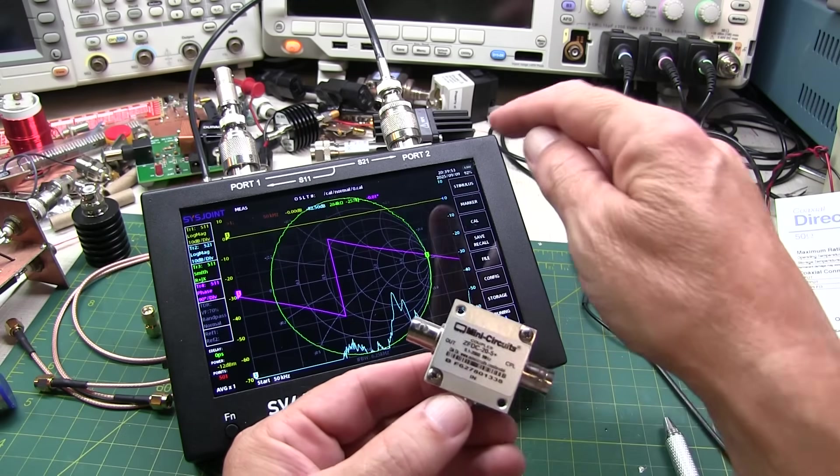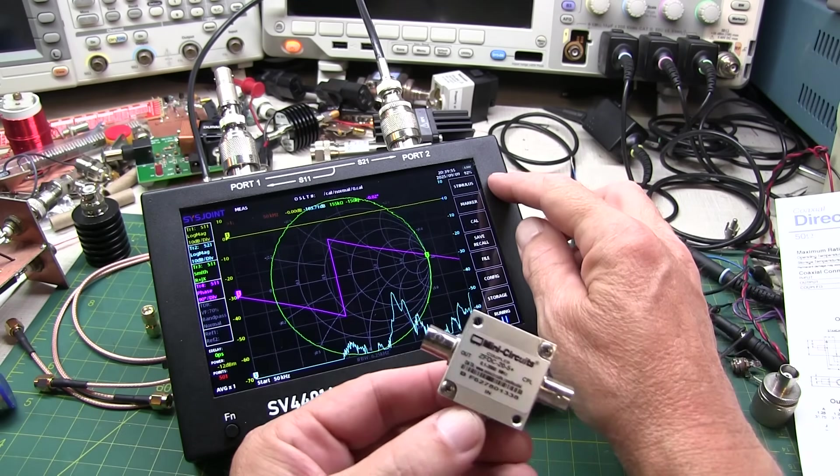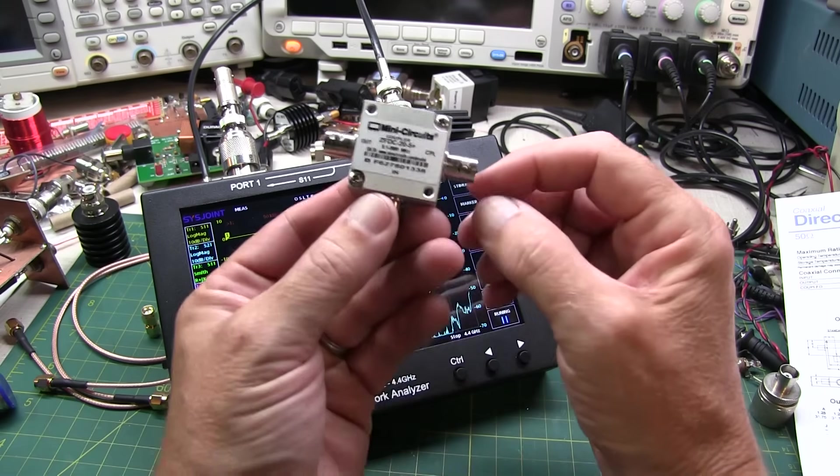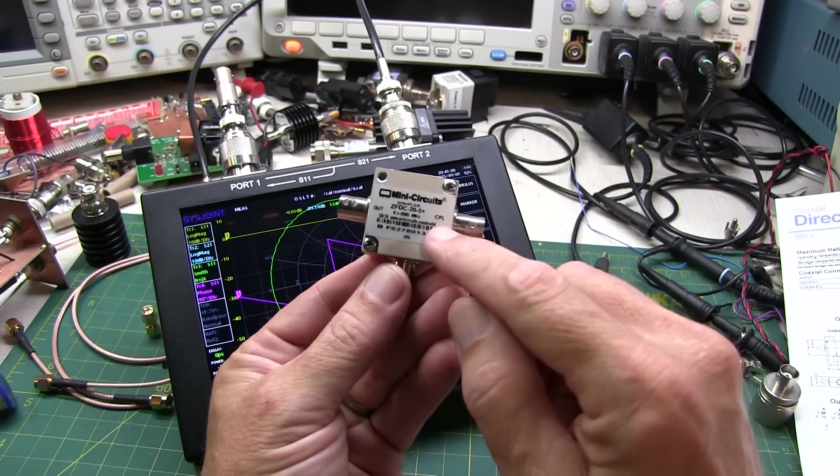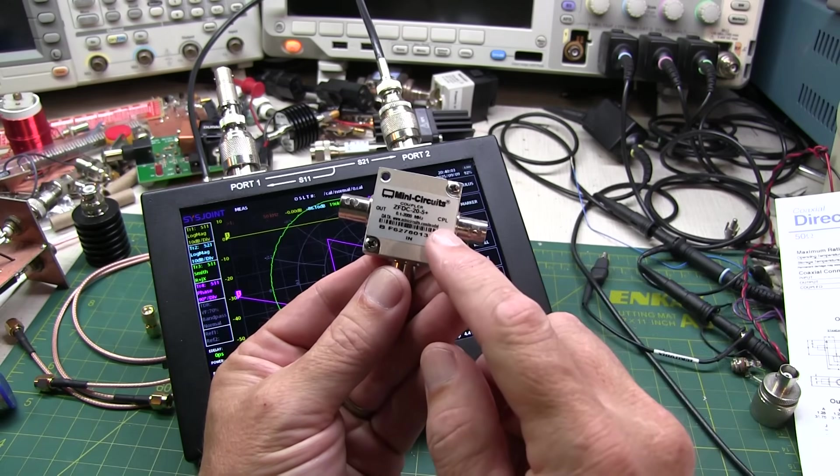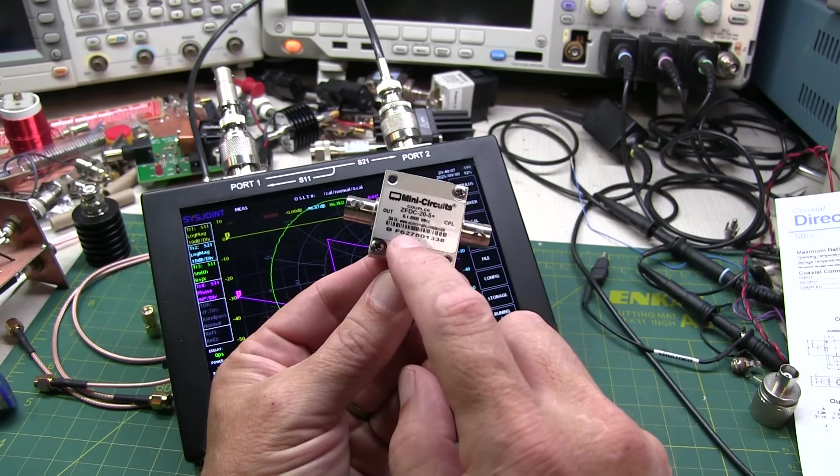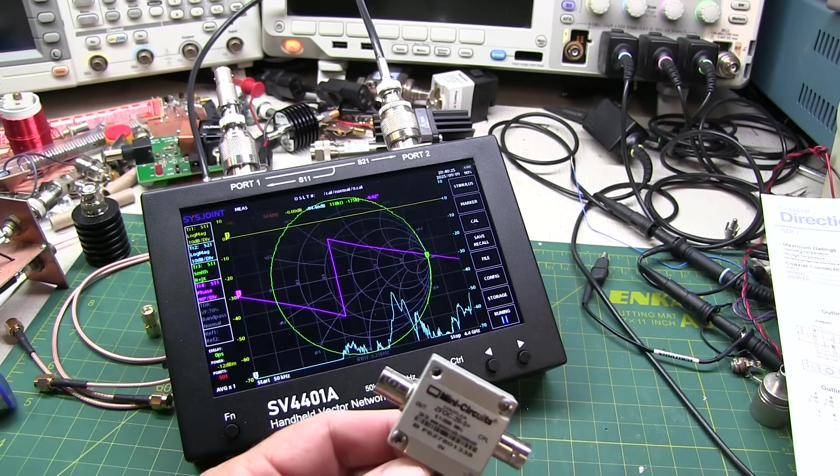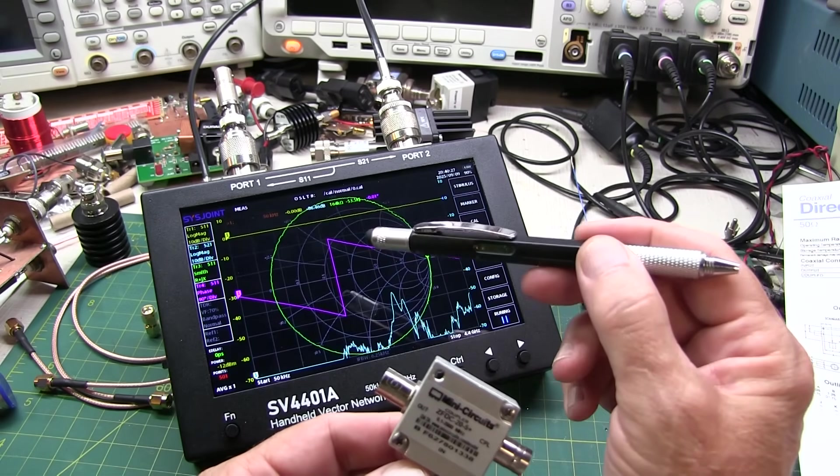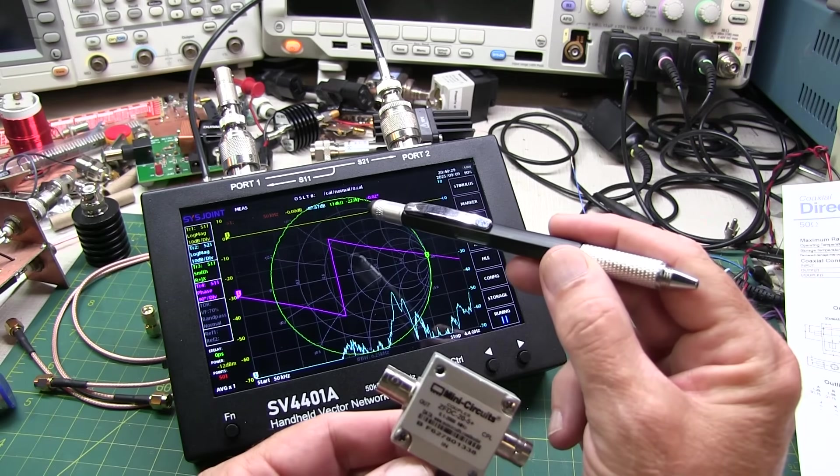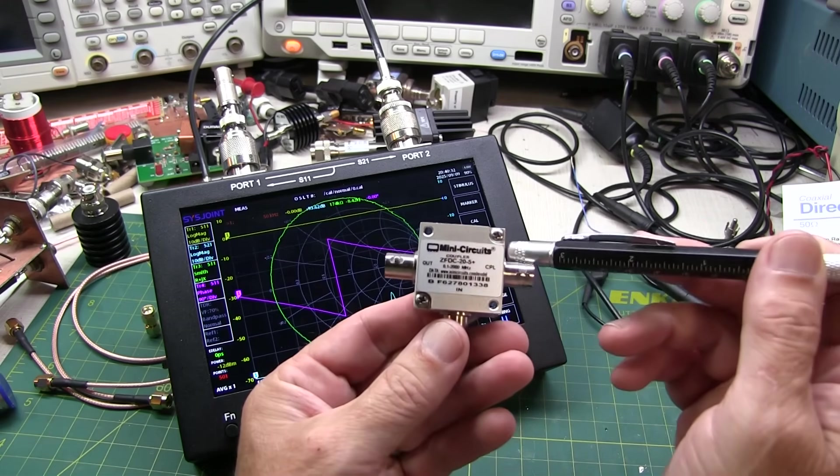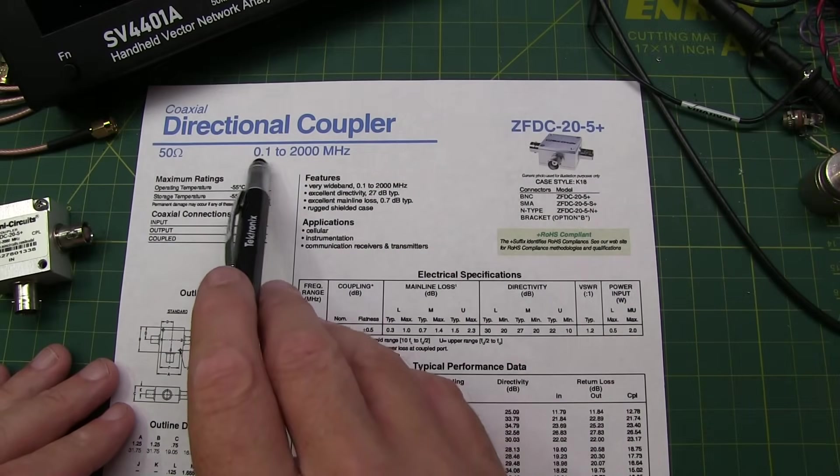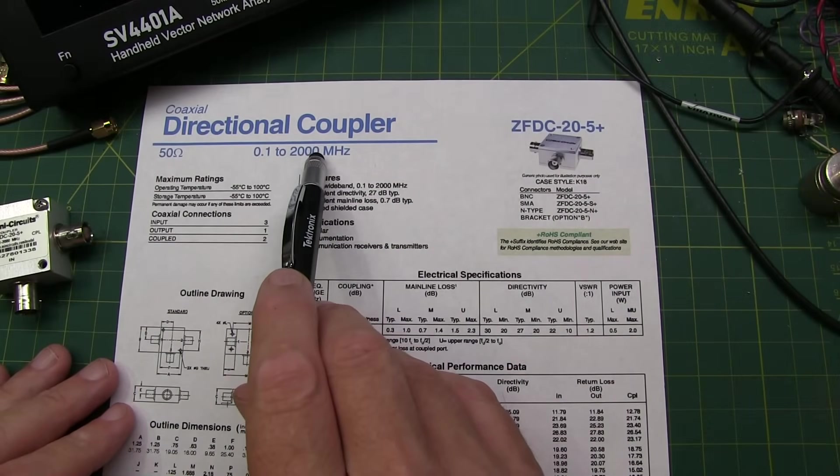In today's video, we're going to use this Sysjoint SV4401A Vector Network Analyzer that I got from Cheligans to characterize the parameters of this Mini-Circuits directional coupler. This is a ZFDC-20-5+. We'll run through the entire process of setting up the VNA, running the calibration, and then running the various measurements on this directional coupler. As we can see from the datasheet, this is a 100 kHz to 2 GHz directional coupler.